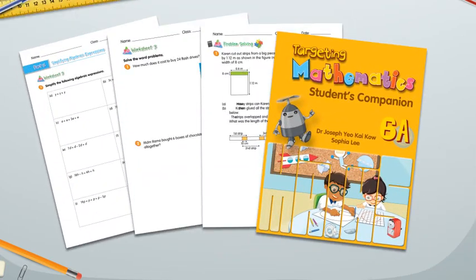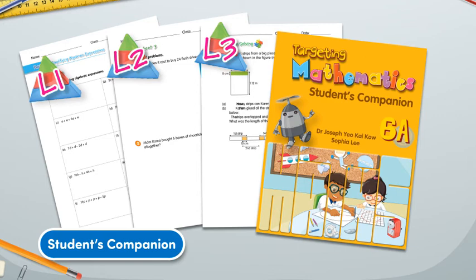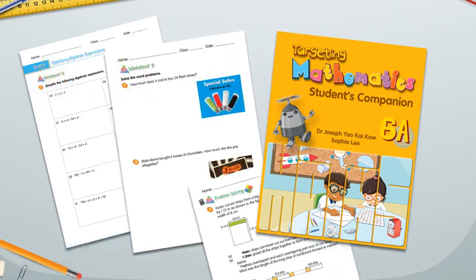The student's companion offers additional practices with differentiated worksheets, Level 1, Level 2, and Level 3, that are developed in conjunction with the textbook chapters.